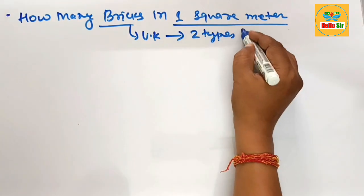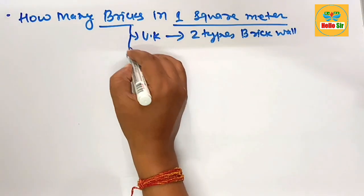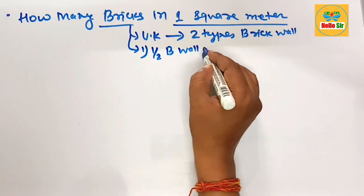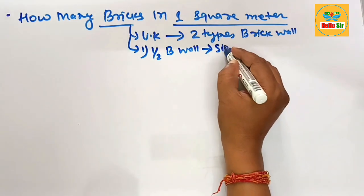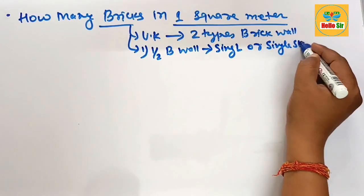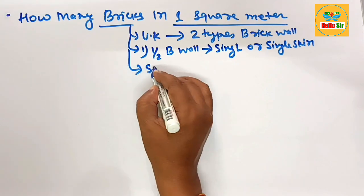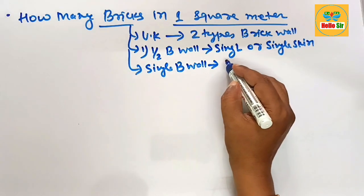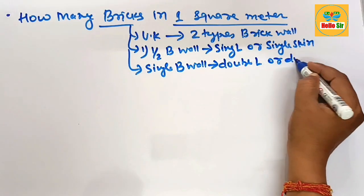The first type is known as a half brick wall, which contains half a brick. This is also known as a single layer wall or single skin wall. The second type is a single brick wall, which contains one brick, and is also known as a double layer or double skin wall.